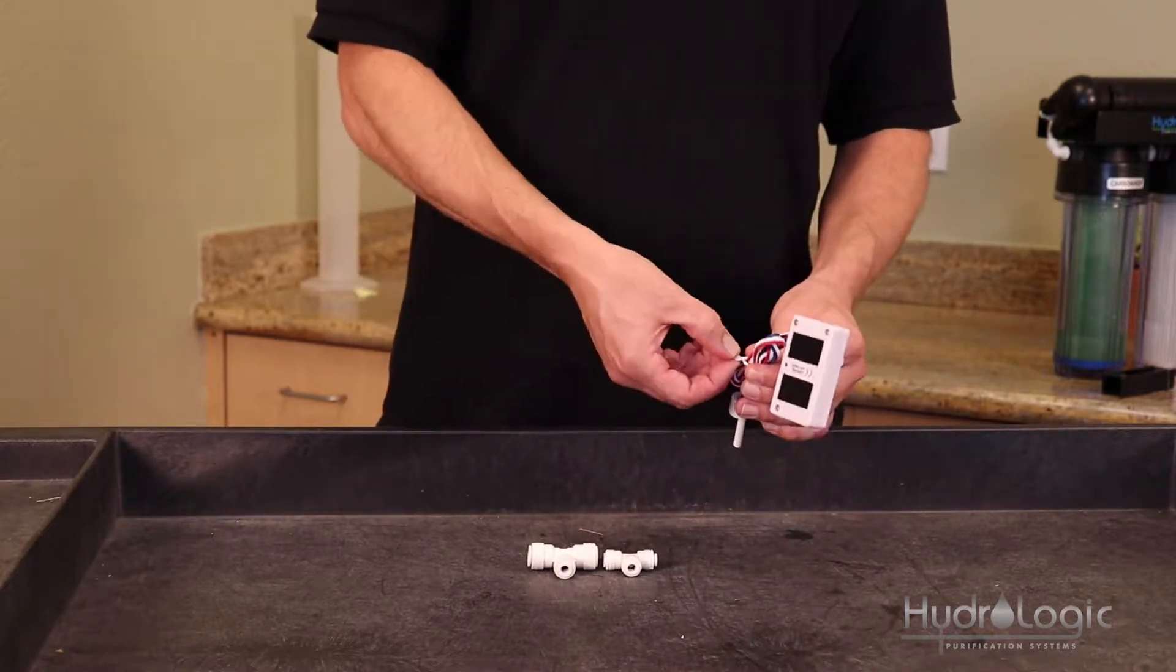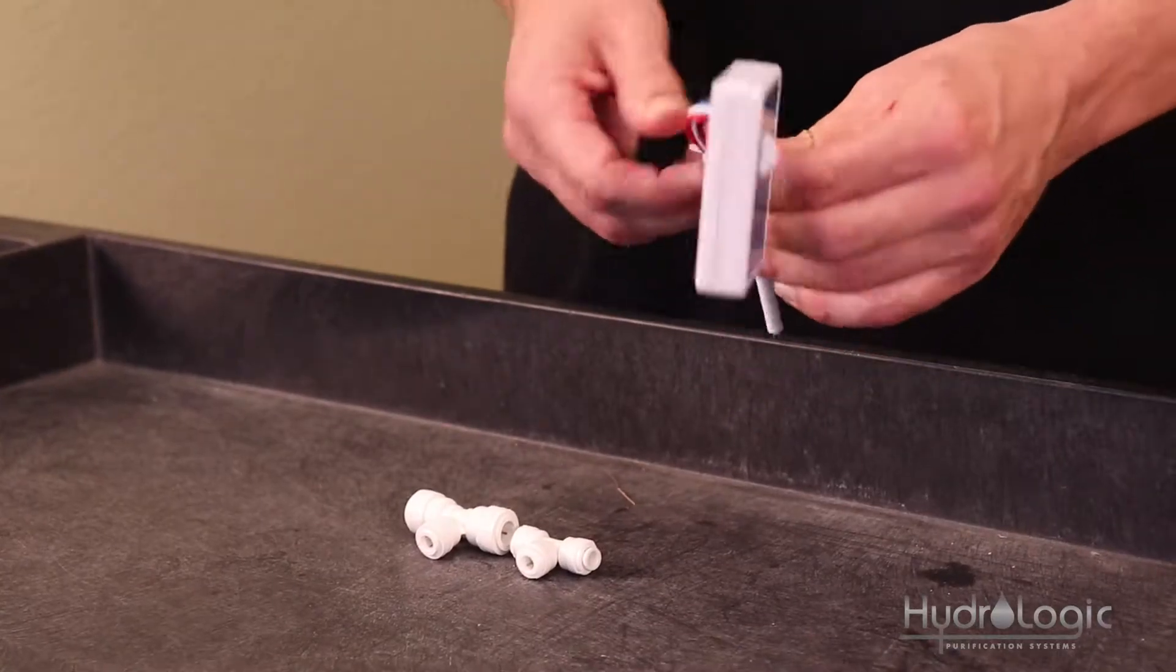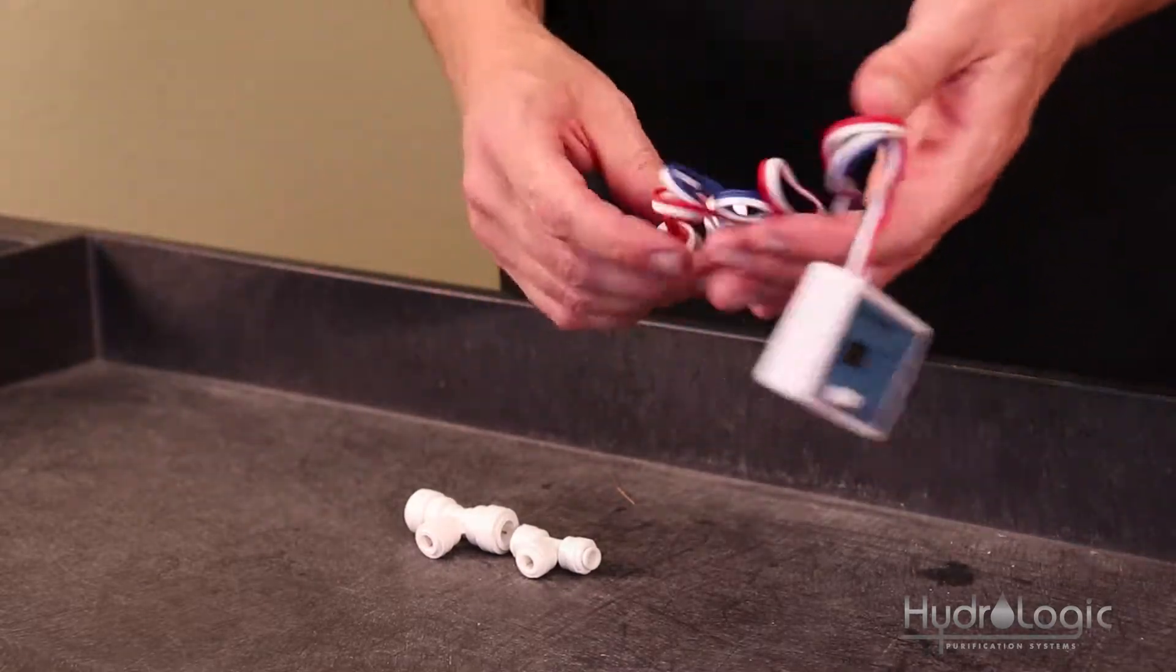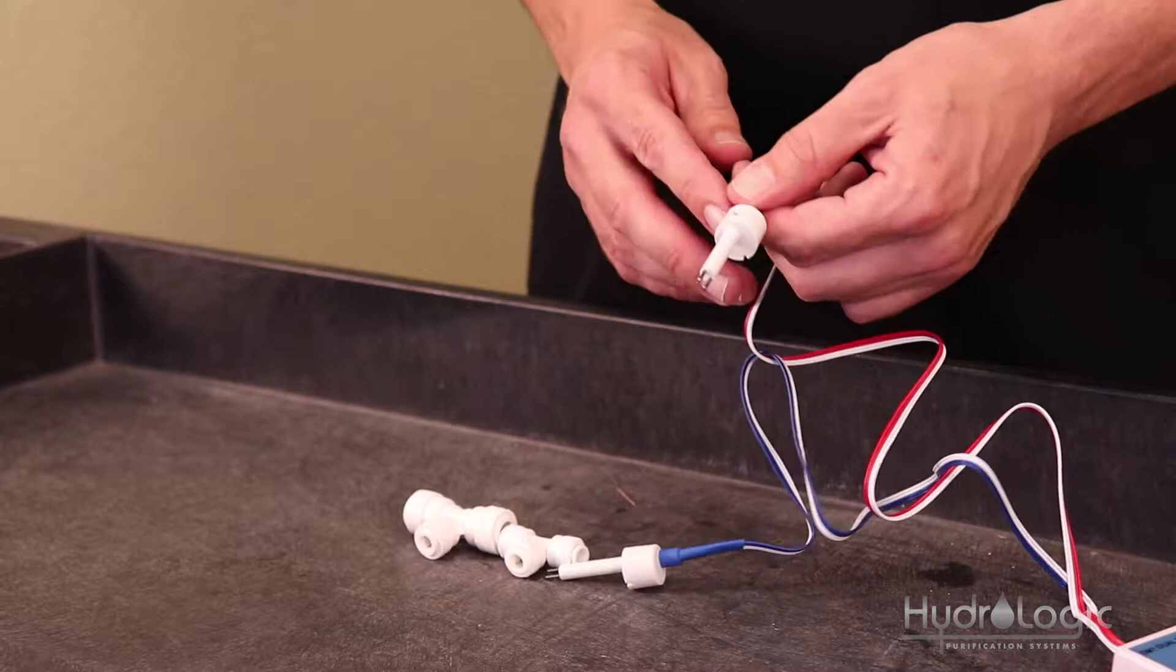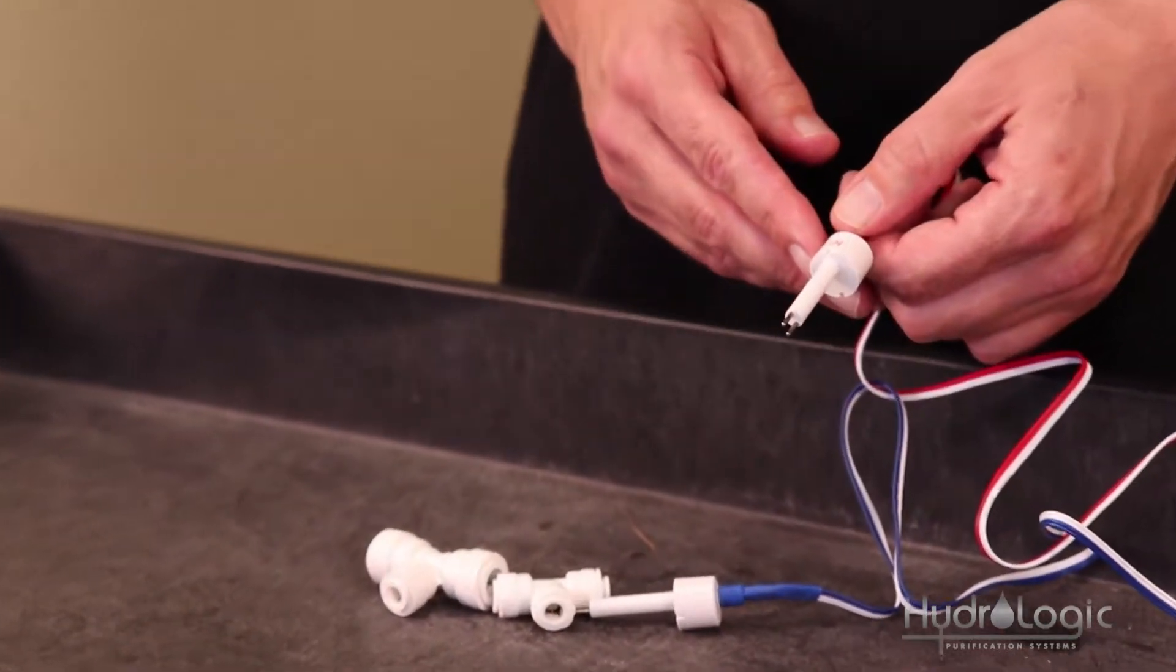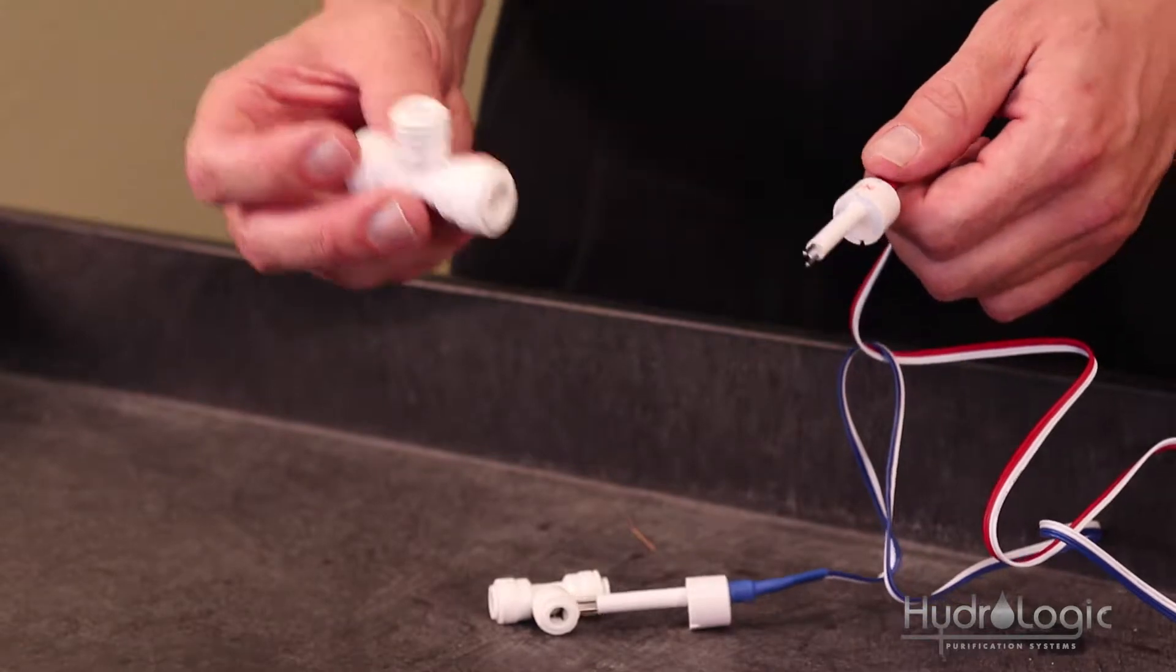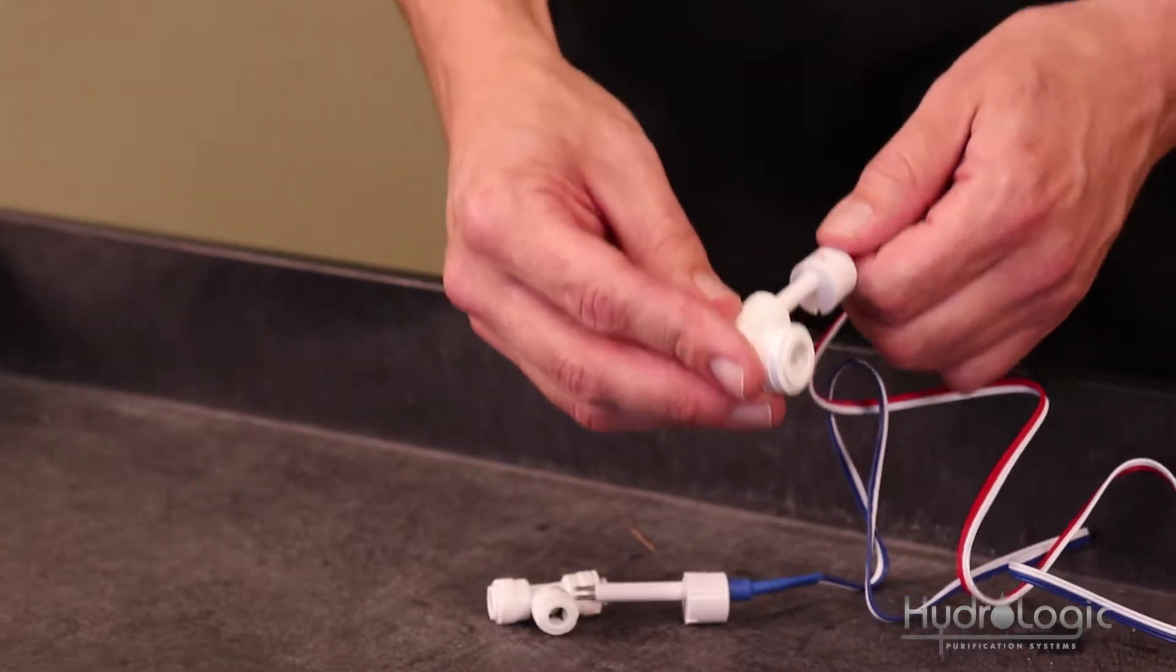So the first thing that you want to do is take these white sensors and install them into the corresponding TDS. So you're going to have your in monitor, this monitor is the PPMs of the water just coming right out of the tap. That goes into the 3 eighths T because 3 eighths is the size of the feed line for your stealth.